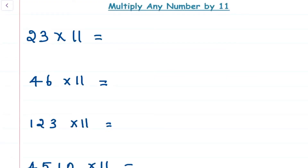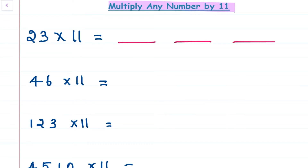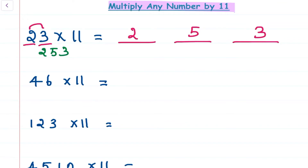Hello everyone, it's me Deepa, welcome to Home and Learn. Today we shall see about the multiplication of any number by 11. First one is 23 into 11. Here we have a two-digit number, so our answer will have three digits. Our first part answer is 2, our last part answer is 3, and the middle part answer is 2 plus 3 equals 5. So our answer is 253.